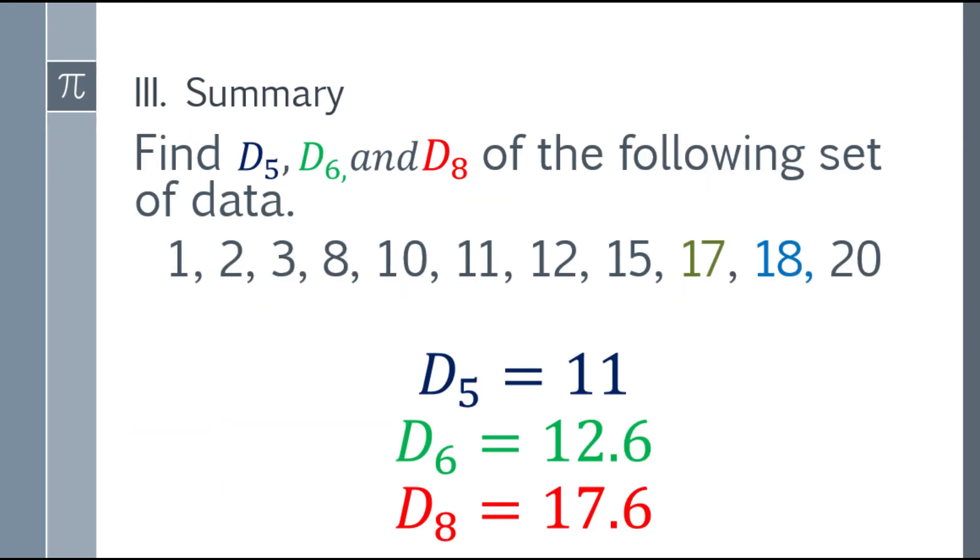Here is the summary of the answers. For the 5th decile, that will be 11, or it's just like finding the median, because D5 or 5th decile is also the median. And 6th decile, that will be 12.6. And the 8th decile is 17.6.